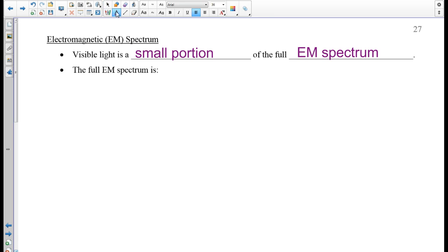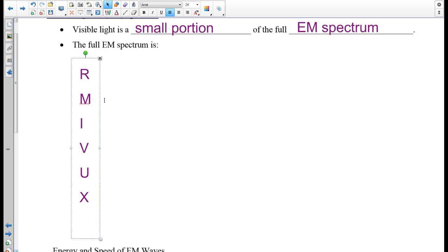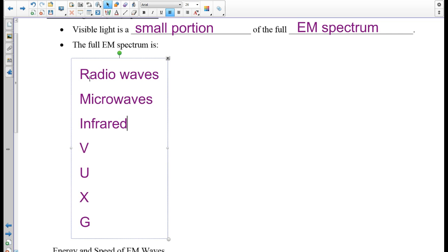Let's write these down. And here's how I remember the spectrum. Raging Martians invade Venus using x-ray guns. So we've got radio waves, microwaves, infrared, visible light, ultraviolet, x-rays, and gamma rays.